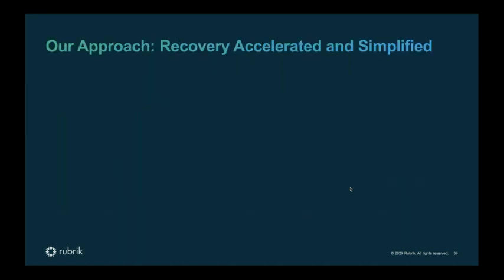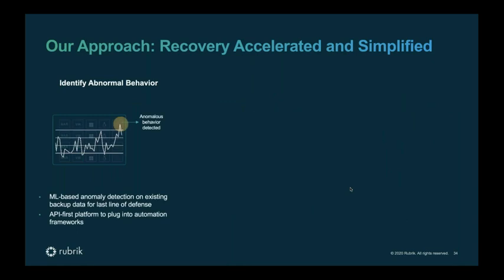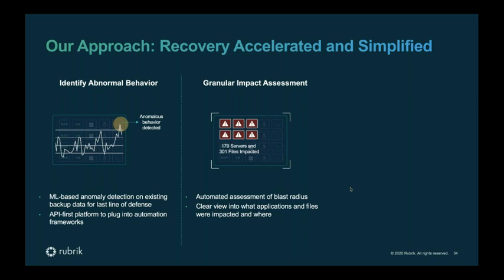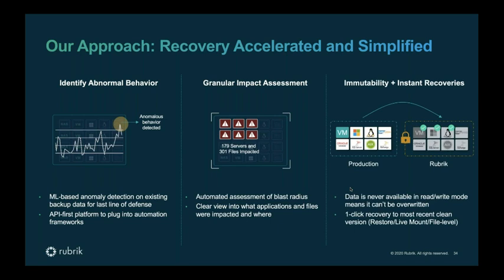At Rubrik, we accelerate this in a simplified way. Once data is under management, after every backup we build a metadata index file sent up to our machine learning-powered cloud in Polaris, which has a pre-trained model looking for anomalous behavior — all done programmatically with nothing to install, just a license that gets turned on. If we see any suspect activity, we automatically generate a clear impact assessment giving customers visibility into what applications and files were impacted, when and where. We also connect back to the last known good version of all impacted files for one-click steady-state recovery to the previous known period in time.